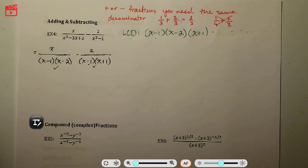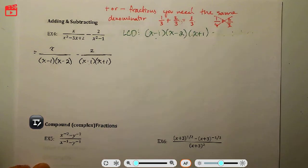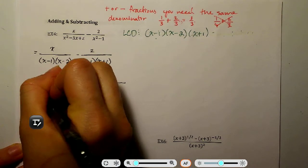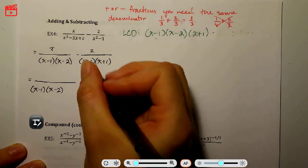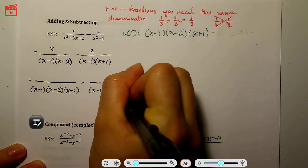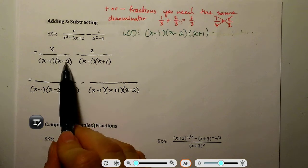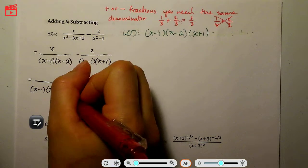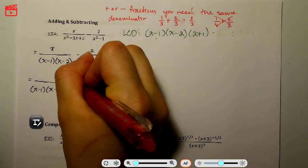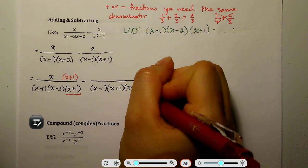Once we have the LCD, the goal is to rewrite each fraction so its denominator matches the LCD. For the first fraction, I multiplied the denominator by (x + 1), so I must also multiply the numerator by (x + 1) — this is the building-up property. The x in the numerator is carried down, and similarly the second fraction's denominator is multiplied by (x − 2) to match the LCD.